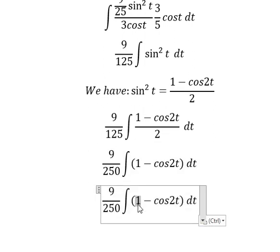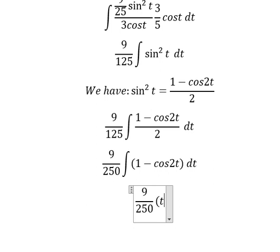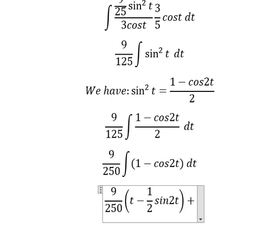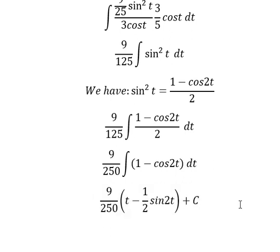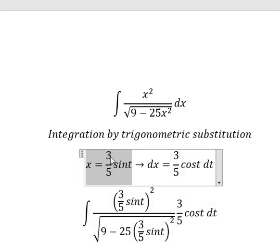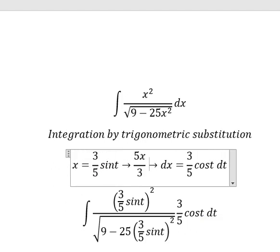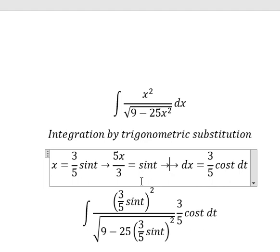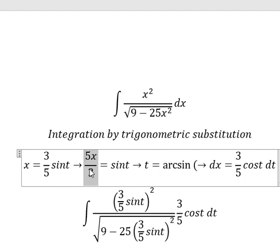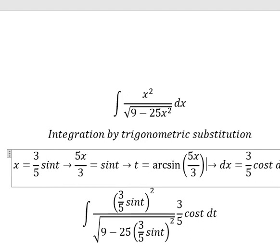Integrating: the integral of 1 gives t, and the integral of cos(2t) gives (1/2)·sin(2t), plus constant C. To back-substitute, we divide both sides by 3/5, and find the value of t as arcsin of x divided by (3/5). We substitute this expression back in for t.